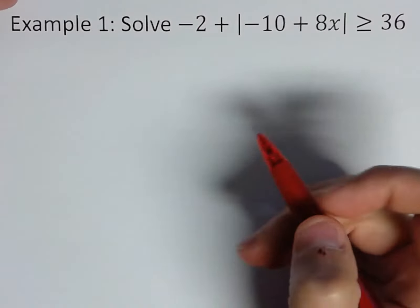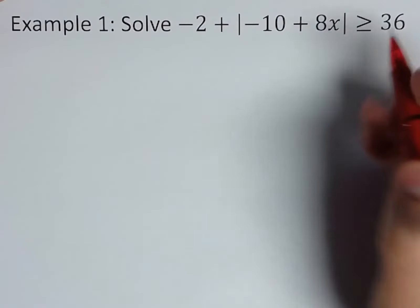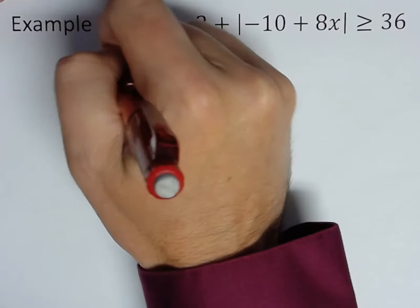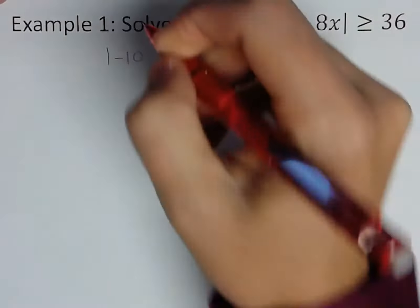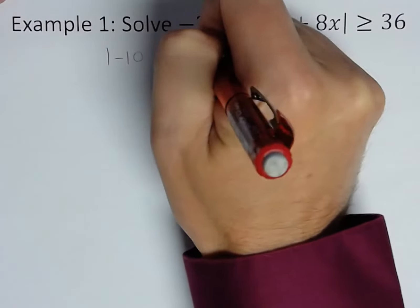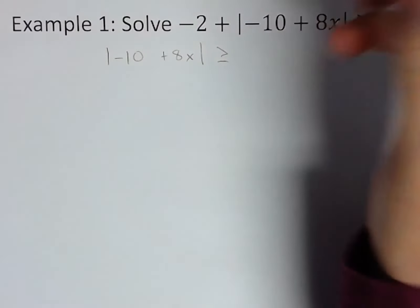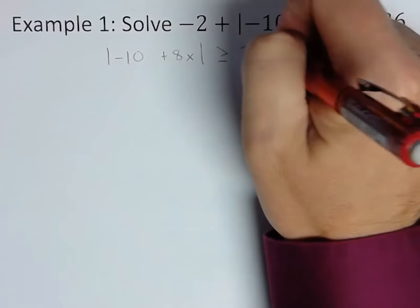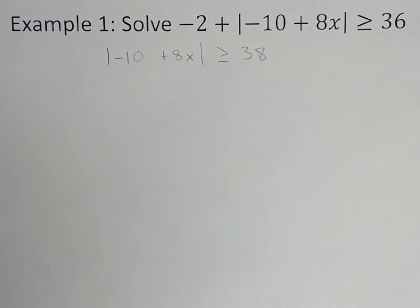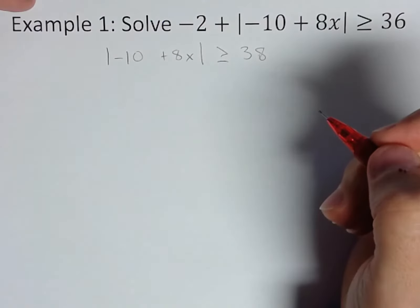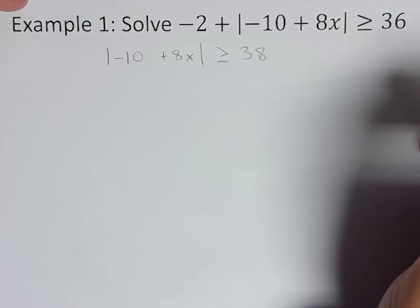Let's go ahead and do that. Let's add two over to the other side, so we'd have an absolute value of negative 10 plus 8x is greater than or equal to 38. We've got our absolute value isolated, we're ready to go ahead and write our two equations.